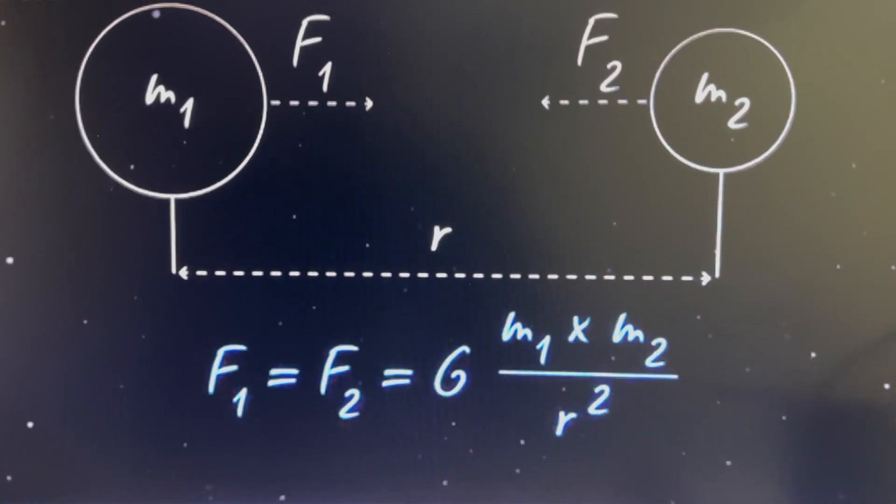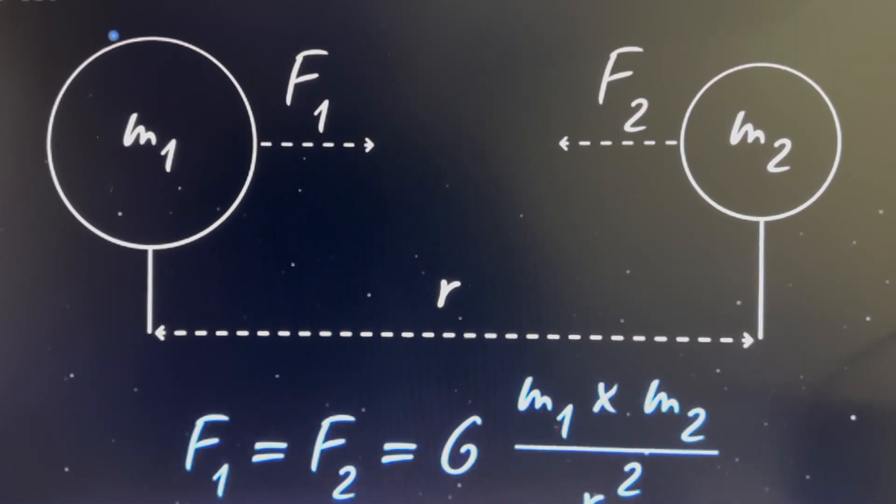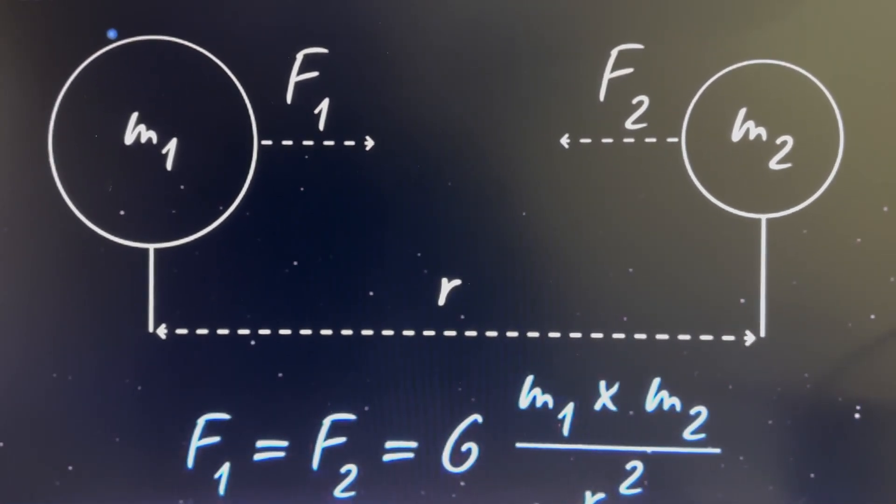Planet 9 believers are pointing to Newton's Law of Universal Gravitation as a basis for its existence, due to the discovery of several distant objects that are behaving in an unusual way.